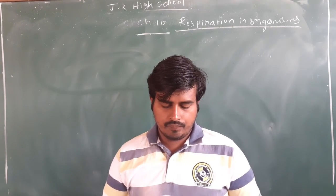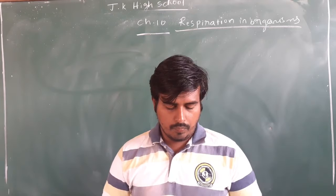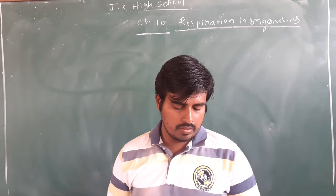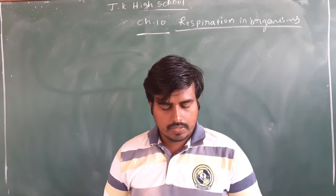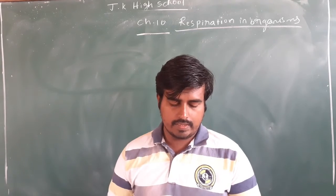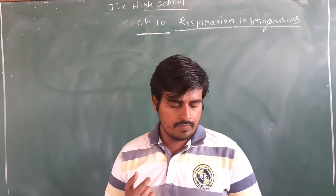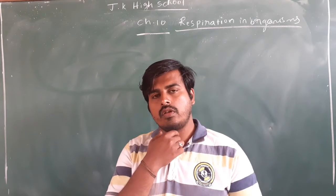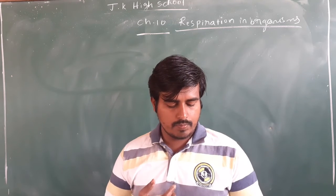Now, how do we breathe? The different parts of the human body involved in the breathing procedure are shown here. You can see a picture of human respiratory organs. You can observe different parts of the respiratory system — that is, the nasal passage or nasal cavity, the oral cavity, and the pharynx. The pharynx is the point where the nasal cavity and oral cavity are joined together.